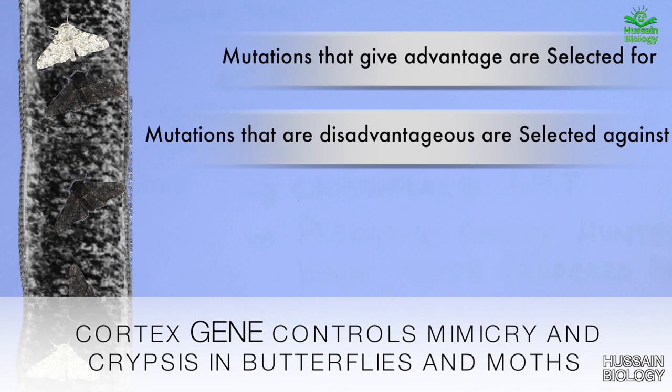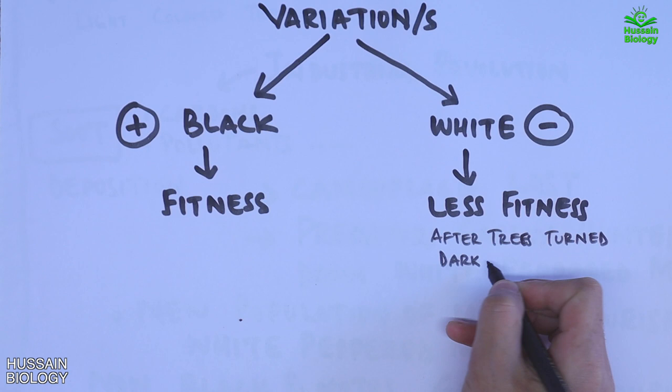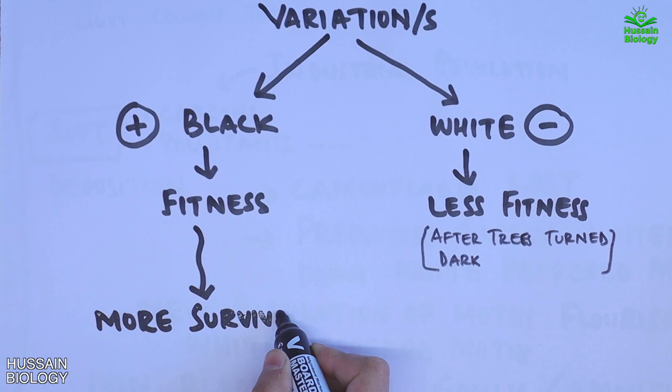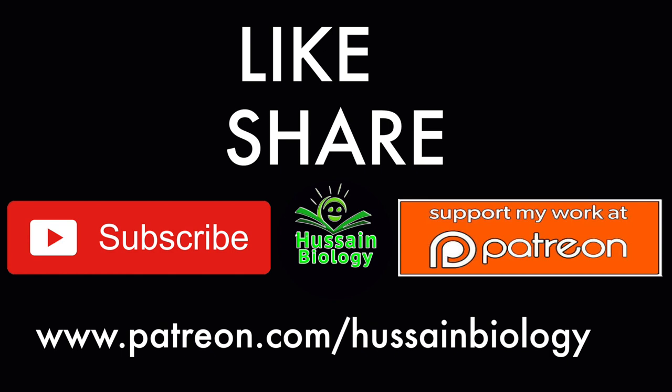After selection pressure comes into existence, mutations that give advantage are selected for and mutations that give disadvantage are selected against. During the industrial revolution, the black peppered moths were selected since they had an advantage in survival, whereas light-colored moths were gradually eliminated as their survival rate diminished in the polluted environment. The black peppered moths had more fitness than the white ones, leading to more survival and reproduction rates for the black ones, while the white ones had less survival and reproduction rates.